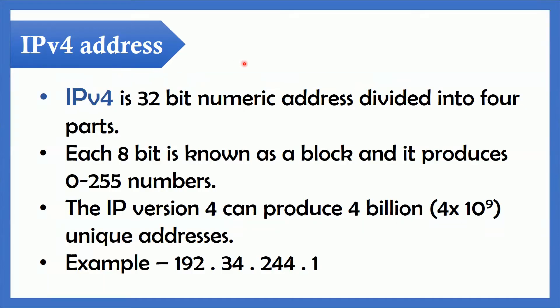Just as you use addresses to identify specific locations of homes and businesses so that mail can reach them efficiently, similarly you use IP addresses to identify the location of specific devices on a network so that data can be sent correctly to those locations. To facilitate the routing of packets over a network, the TCP/IP protocol suite uses a 32-bit logical address known as an IPv4 address. This address must be unique for each device in the internet network.